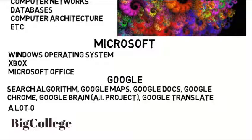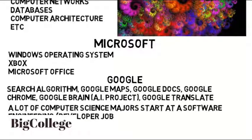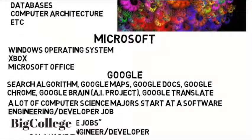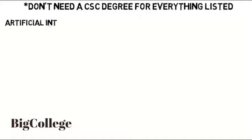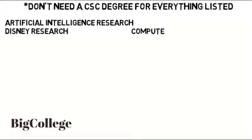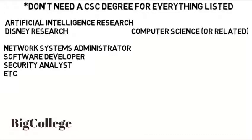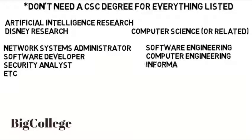It's important to note that a lot of computer science majors start off in software engineering or development jobs, but you shouldn't get too tripped up on the labels or what the job is called — focus more on what you specifically want to do. If you do a search for computer science jobs, the majority come up titled software developer, software engineer, or something very similar, but these jobs differ a lot. As a disclaimer, you don't need a computer science degree for everything listed in this video. Some jobs like AI research or that Disney research position required computer science or a similar degree, but for network systems administrator, many software developer jobs, security analysts, and so on, listings included software engineering, computer engineering, or information systems on top of computer science. You also hear of people who are self-taught, attend boot camps, and achieve programming or software developer jobs.